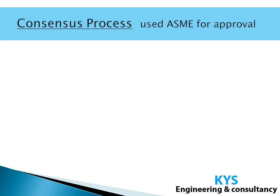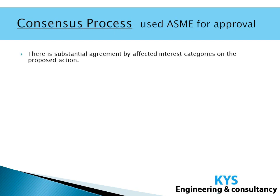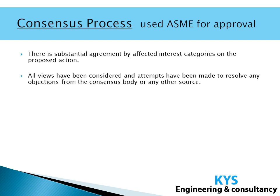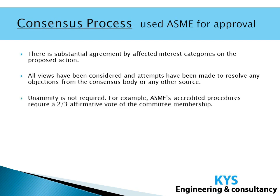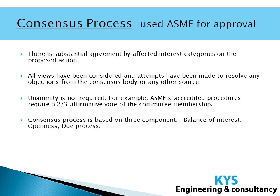Now let us see the consensus process used for approval of ASME codes and standards. First, there shall be substantial agreement by the affected parties involved. All views shall be considered, and if there is any objection by any party, an attempt shall be made to resolve those objections by the consensus body. It is not that 100% agreement is required — even two-thirds affirmative votes are acceptable for approval. The consensus process is based on three components: balance of interest, openness, and due process.